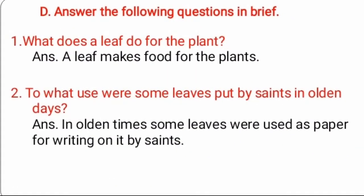Then D: answer the following questions in brief. One: what does a leaf do for the plant? Answer: a leaf makes food for the plant. Two: in olden days, answer: in olden times, some leaves were used as paper, for writing on them by sages.